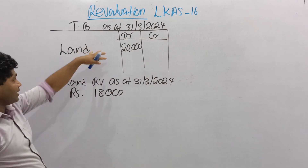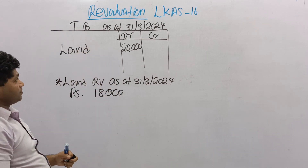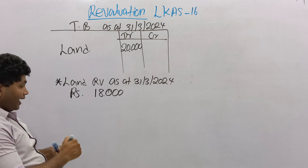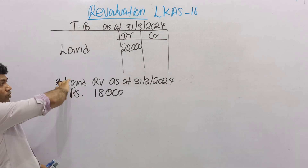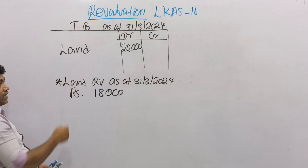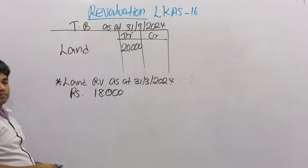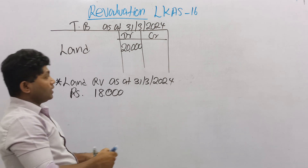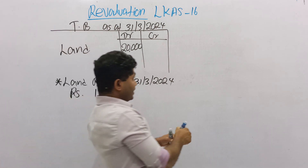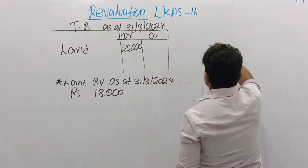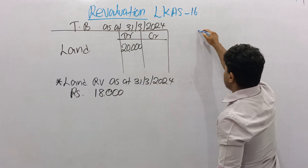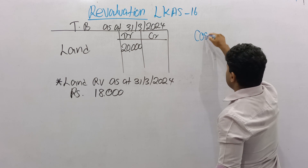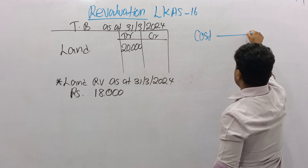Land is a non-depreciable asset. Think about how to calculate the profit and loss, and how to disclose it on the financial statement. Since land is non-depreciable, when calculating profit and loss, you have to compare with the cost value.